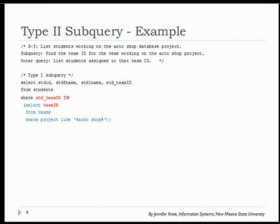Let's take a look at an example. We're going to see a list of students working on the AutoShop database project, so they're on a team that was assigned this particular project. The subquery will find the team ID for the team working on the AutoShop project, and then the outer query will list the students assigned to that team ID.